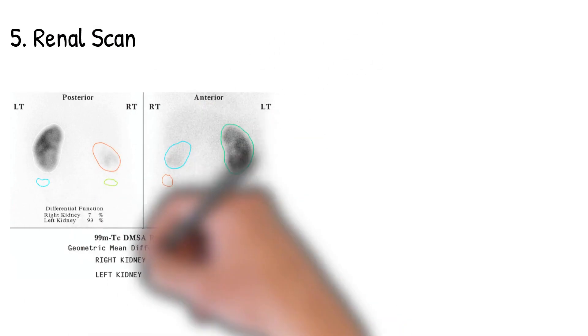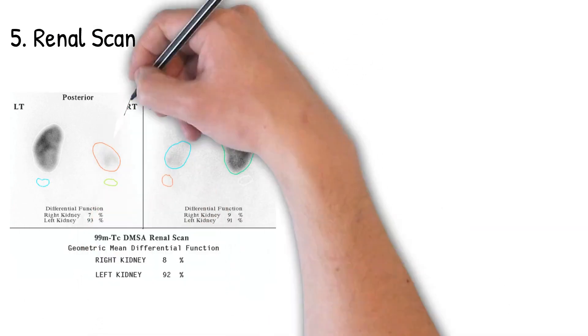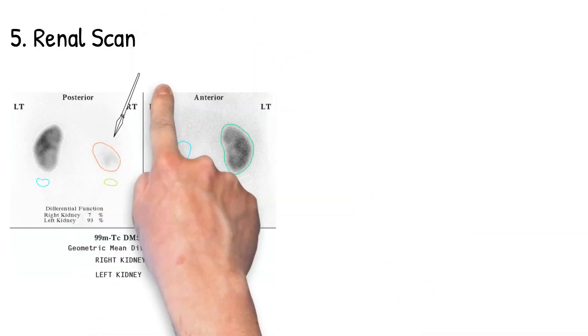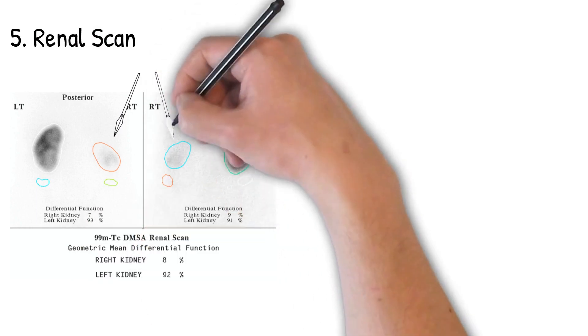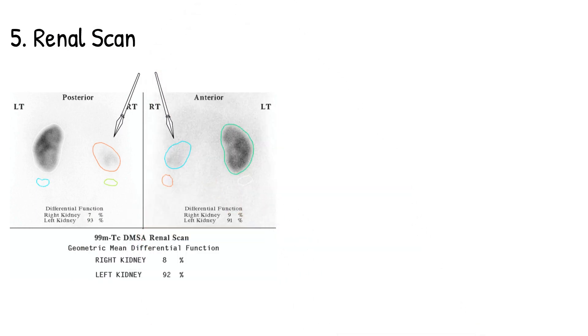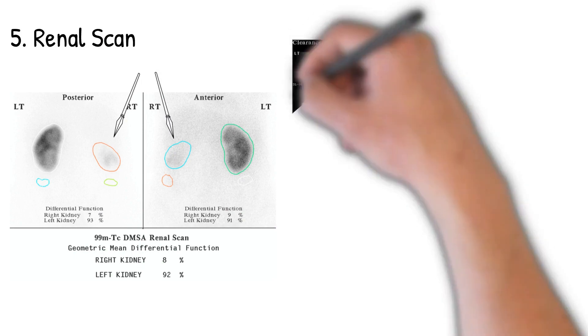There are a number of types of renal scans we do. One common one is for looking for pyelonephritis and scarring associated with urinary tract reflux and infection. This indicates, as you can see with the arrows, that the right kidney is not functioning as well as the left kidney and may guide surgery.